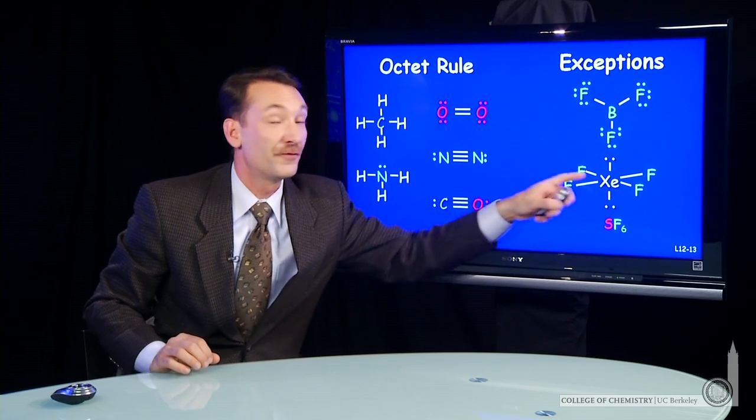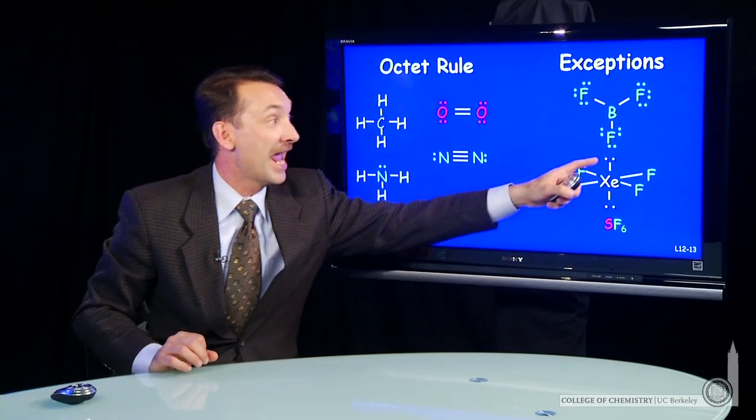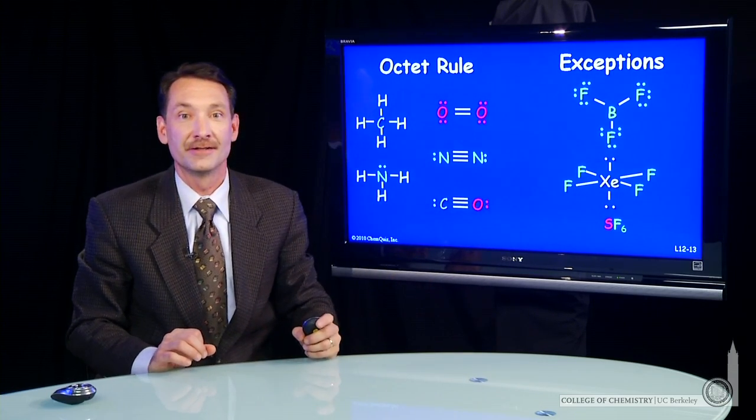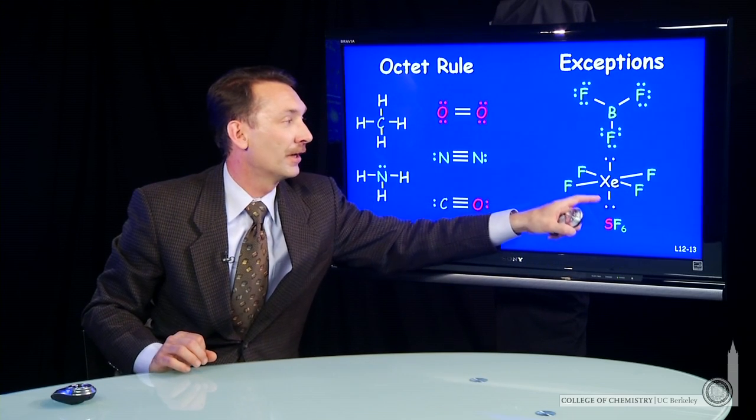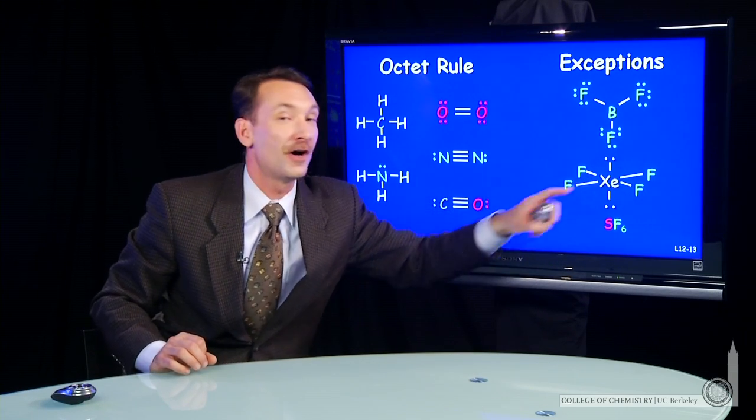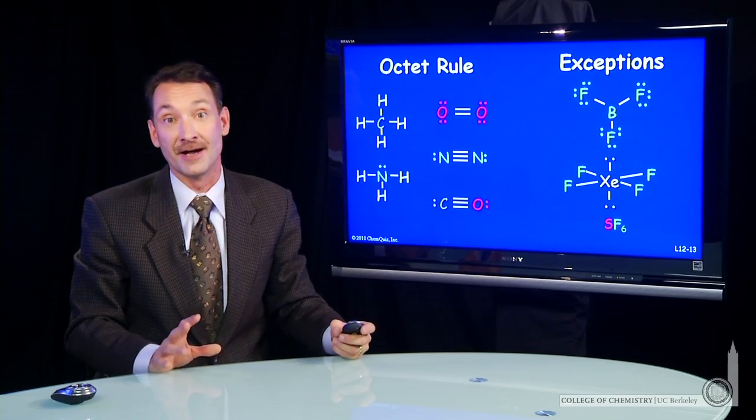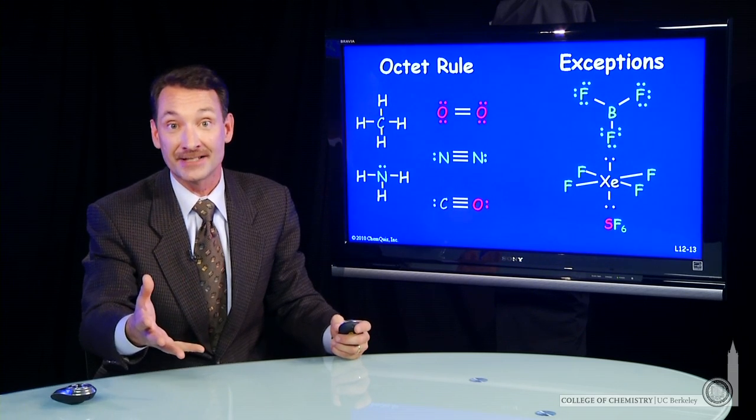Here's xenon with four fluorines bonded to it and two lone pairs. That's 2, 4, 6, 8, 10, 12, 12 electrons around xenon. That's an expanded octet, more than 8.